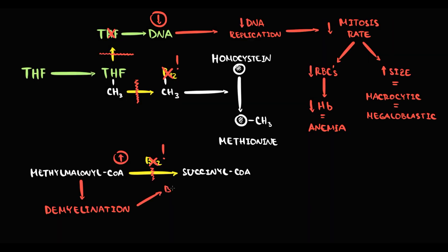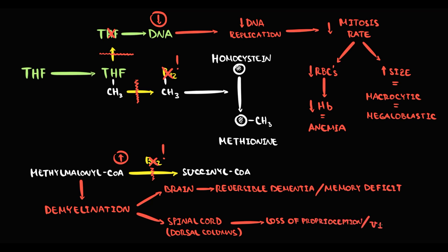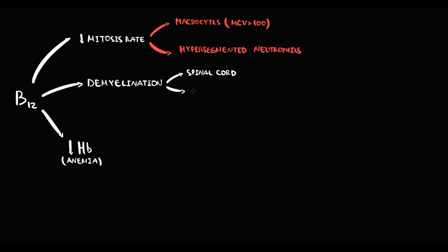Demyelination of the brain neurons causes reversible dementia and memory deficit. Demyelination of the spinal cord usually occurs at the dorsal columns and causes loss of proprioception and vibration sense. Basically, the signature manifestation is that patients will frequently fall during walking, simply due to the progressive loss of proprioception. So demyelination of the spinal cord causes loss of proprioception and vibration sense, and demyelination of the CNS causes reversible dementia.